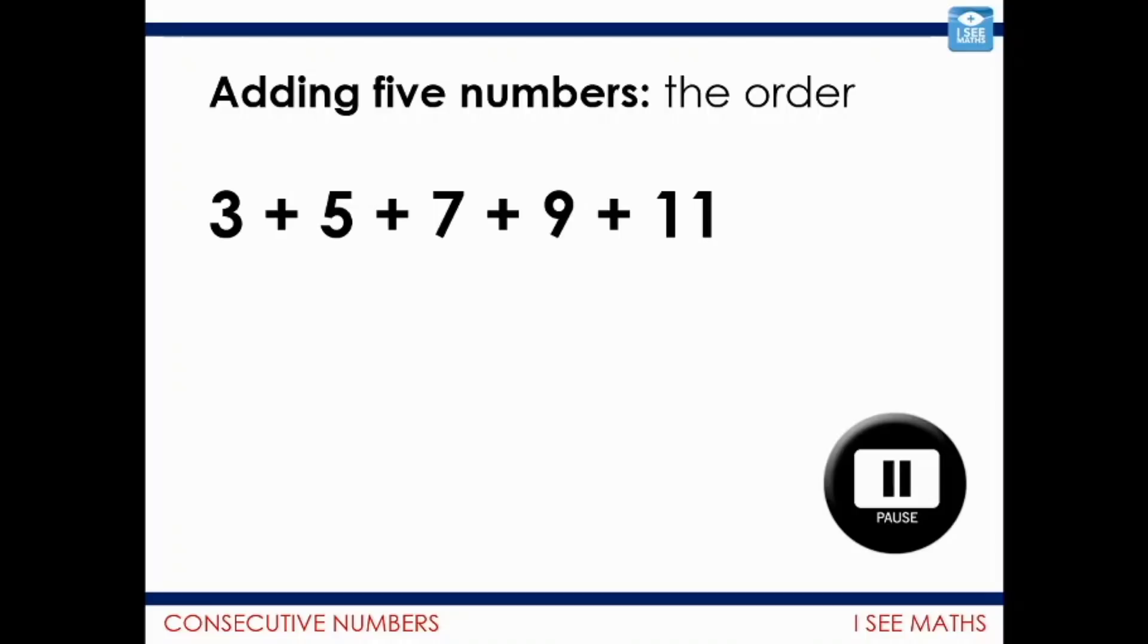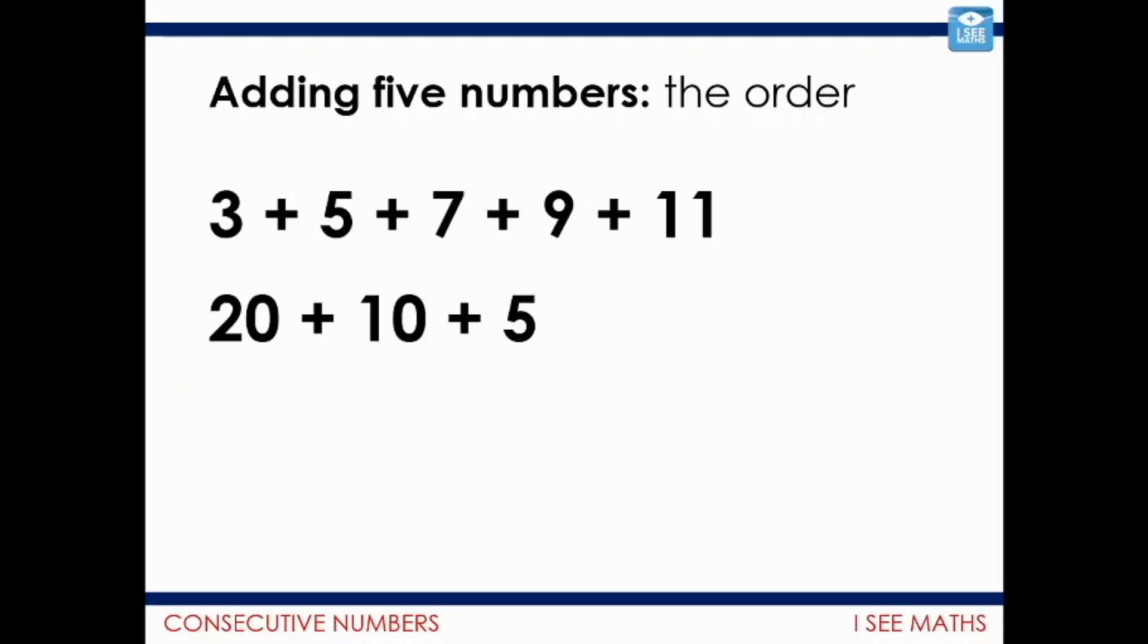Okay, and I assume we're ready to have a look. So you might have done it like this. You might have done it differently. I, first of all, started from the 9 plus 11. That makes 20. Then I saw a number bond to 10. 7 and 3, that's 10. 20 and 10, that just leaves me the 5 to add. 35 is one way it can be done.